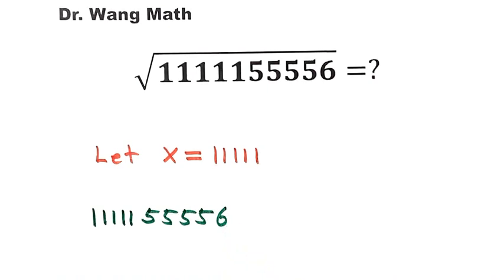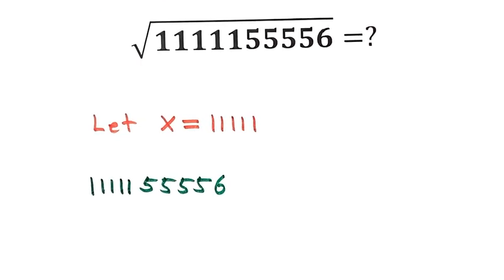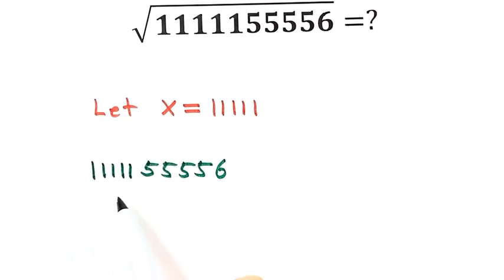First, we break up the number into three parts. The first one is just five ones followed by five zeros, so times 10 to the power of 5. Then for the last five digits, we break them into two parts: five fives, then plus one.